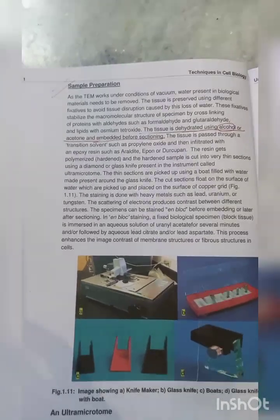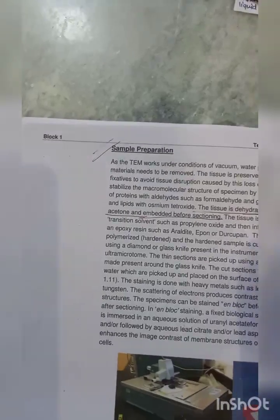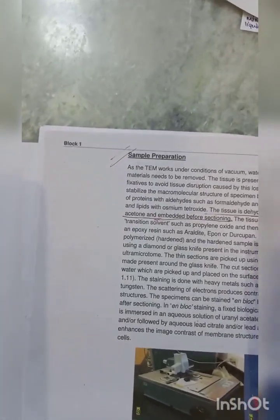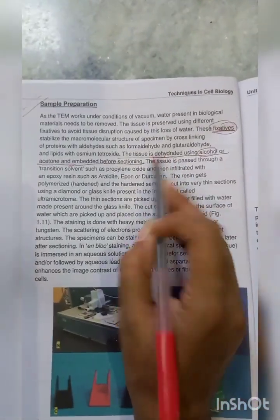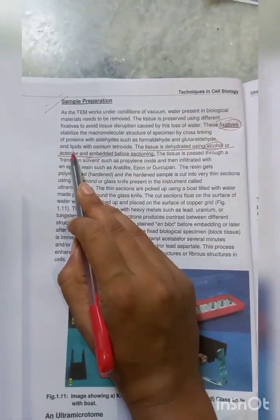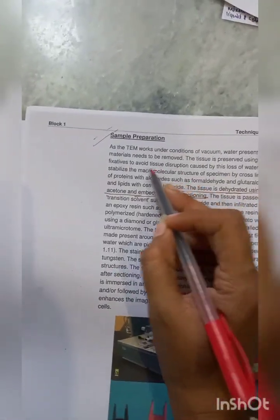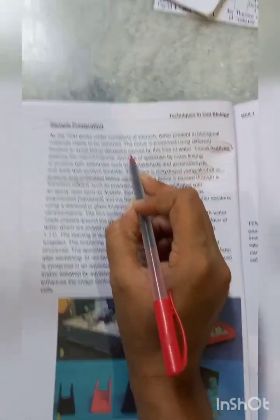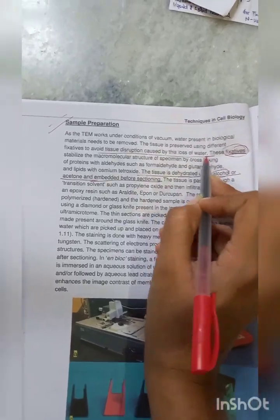Now one question was given: what are the fixatives used in electron microscopy? These are fixatives like alcohol or acetones. These fixatives are used to avoid the disruptions caused by the loss of water. This was a one-word question given somewhere.